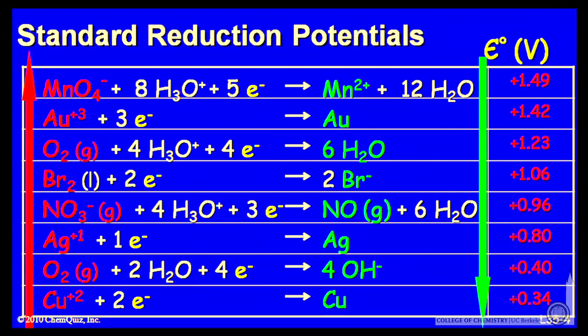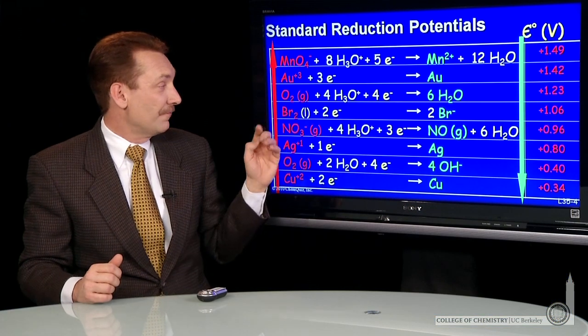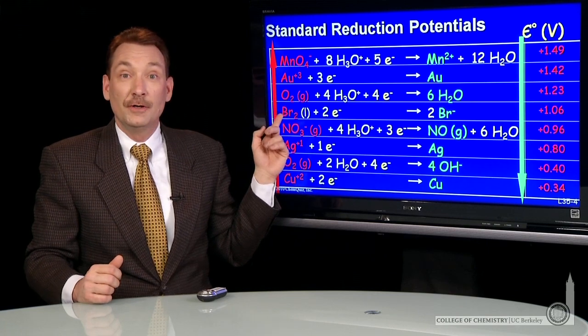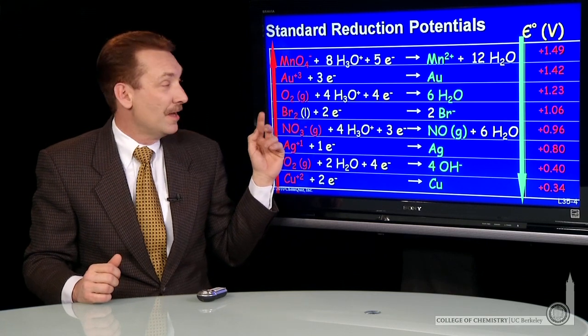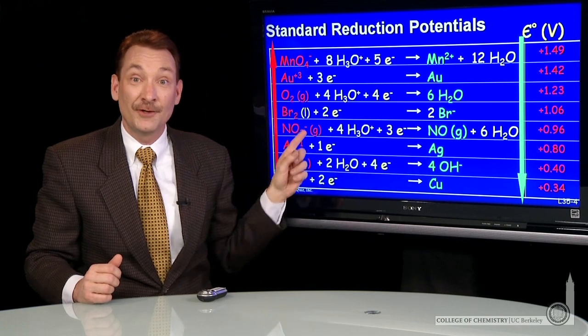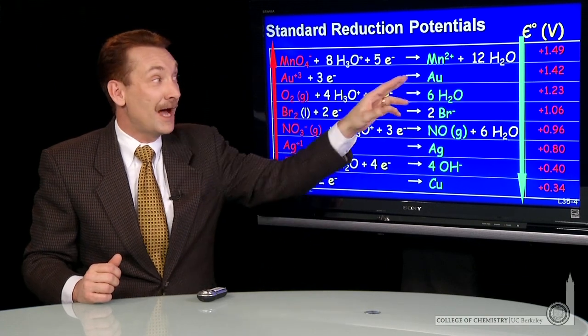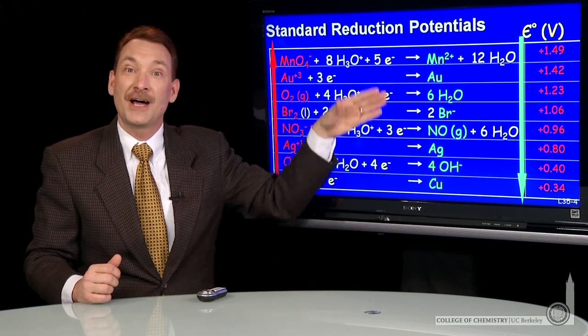You can also use it to bracket relative oxidation strength. For instance, Br2, bromine liquid, when it is reduced, it could oxidize silver metal. But it would not be able to oxidize gold metal, which is higher on the table.